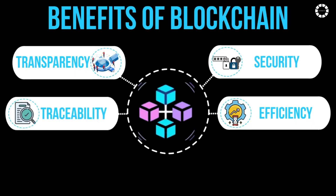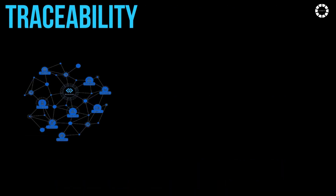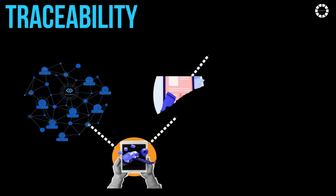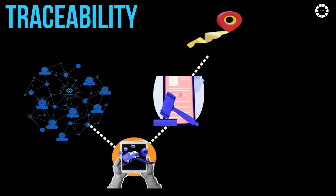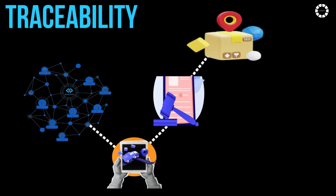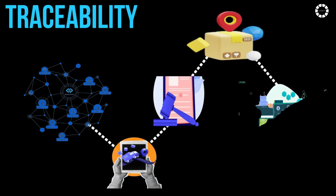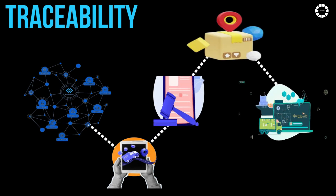Traceability: With Blockchain, every transaction is recorded and time-stamped, enabling easy traceability of goods or assets throughout their life cycle, which is particularly valuable in supply chain management and provenance tracking.